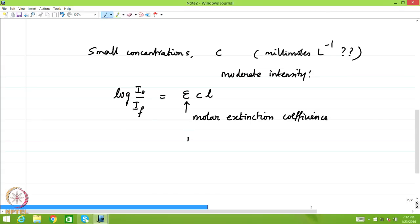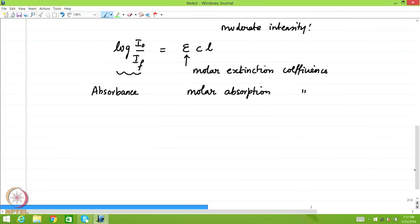or molar absorption coefficient. And this is called absorbance. You can also write this in the form of transmitted radiation. This ratio, the logarithm of I naught by I f gives a constant associated with each system, each chemical species.